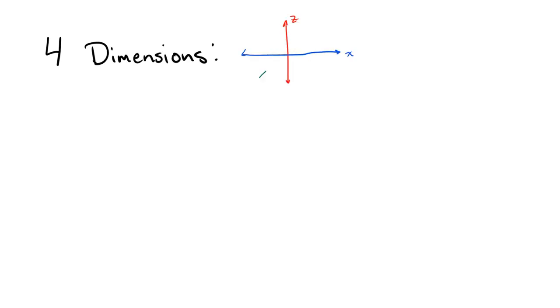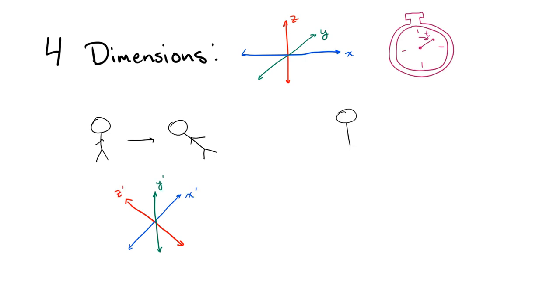Our universe has four dimensions: up and down, left and right, forward and back, and time. These four dimensions can mix and blend together depending on the observer, but there are always four, never more, never less. Or are there?